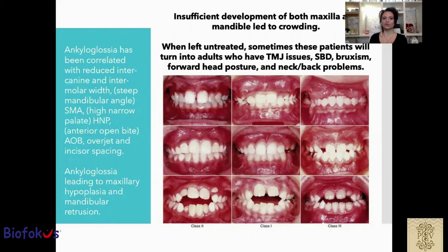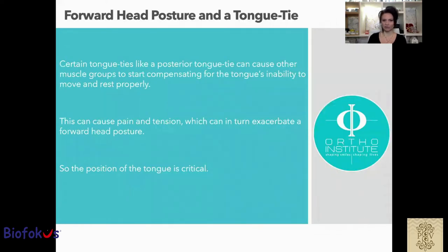Ankyloglossia has been correlated with reduced intercanine and intermolar width, and is also leading to maxillary hypoplasia and mandibular protrusion. Forward head posture and tongue tie are related: a posterior tongue tie, for example, can cause other muscle groups to start compensating for the tongue's inability to move and rest properly. This can cause pain and tension, and can turn and exacerbate forward head posture.